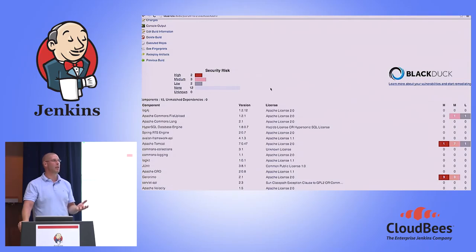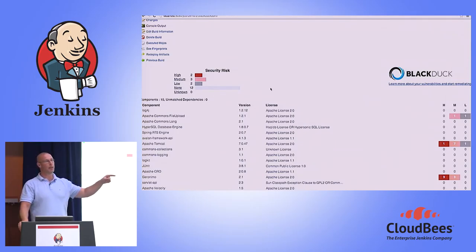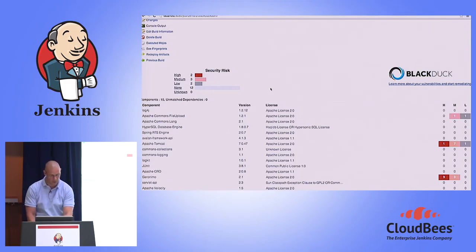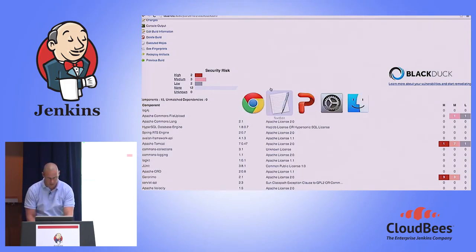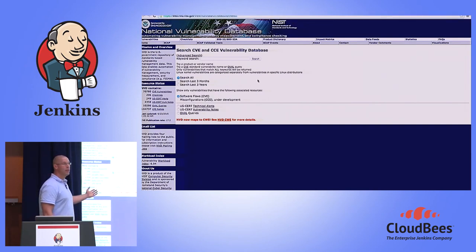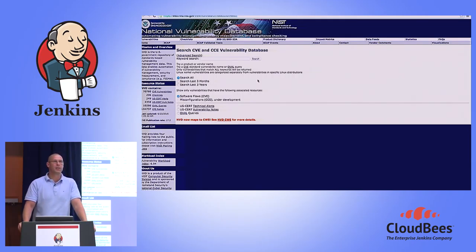How do we get high, medium, and low? When we interrogate the vulnerability database — the NVD — that's actually how they measure it; they always say high, medium, and low. If you don't know what I'm talking about, there's a website where you can query for your components and get a list of all their vulnerabilities.